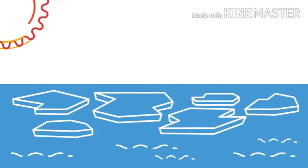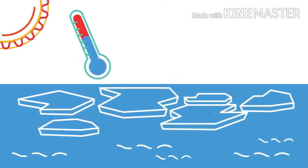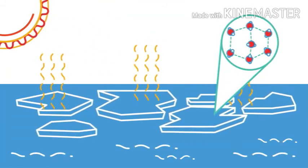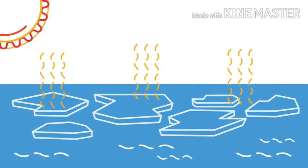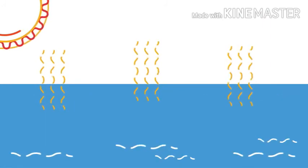Think of the Arctic sea ice. In the summer, when air temperatures are warmer, more heat energy is absorbed by the ice. This causes bonds to break between the ice's water molecules, and the ice starts to melt. The solid ice becomes liquid water.